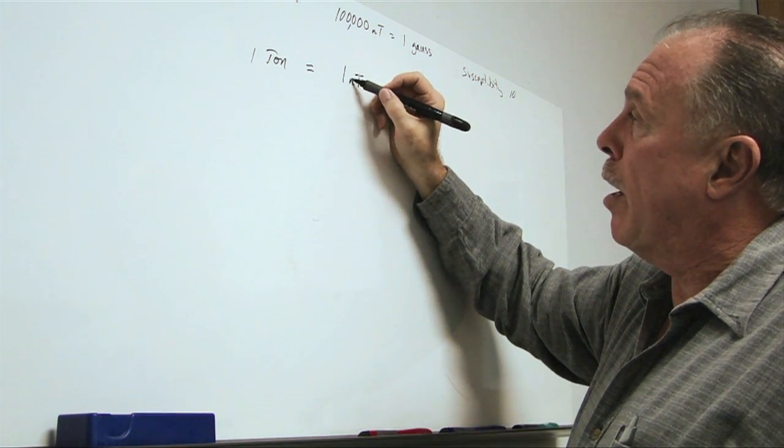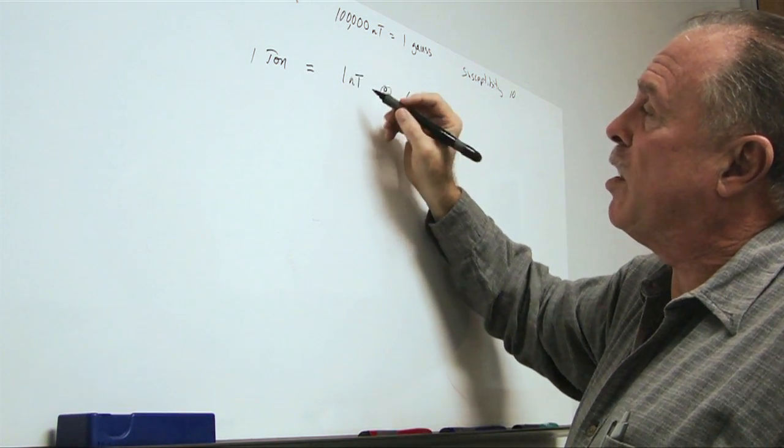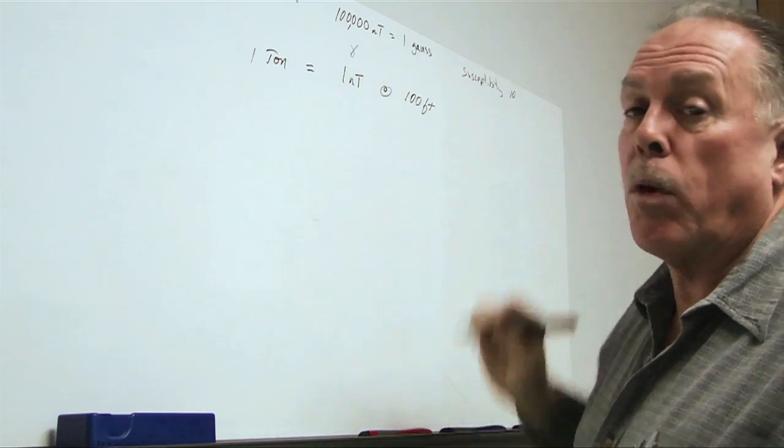By the way, in the parlance of geophysics, one nanotesla is also sometimes called one gamma.